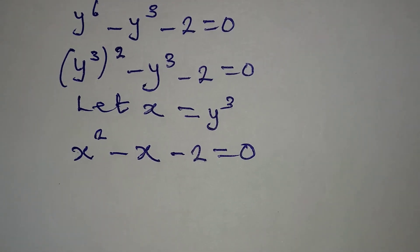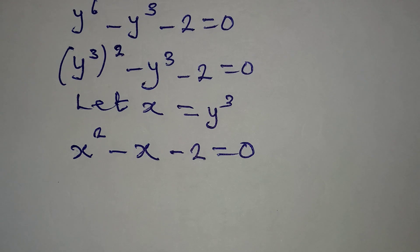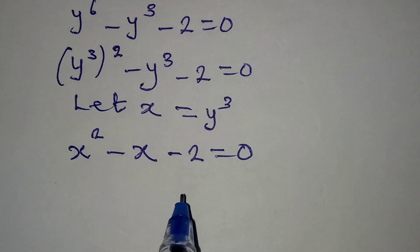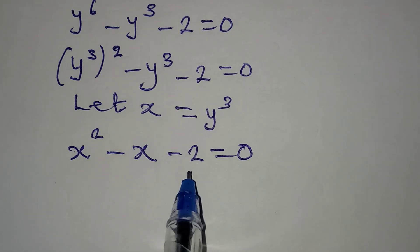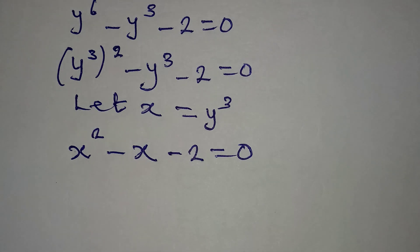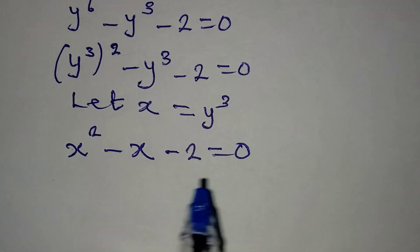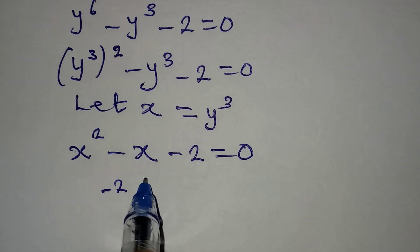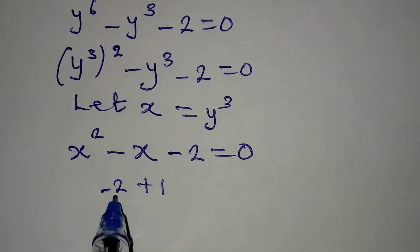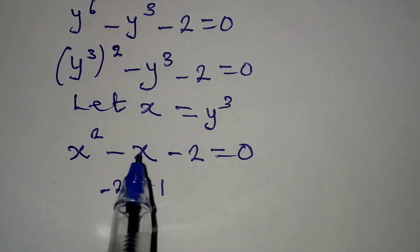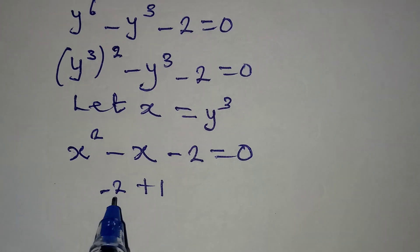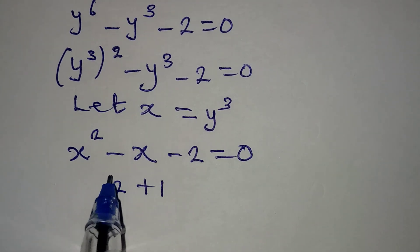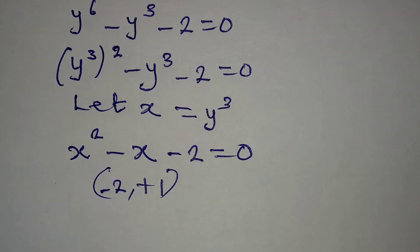We have a quadratic equation that we can solve by factorization. If we are going to solve this using factorization, the question is: what two numbers do we multiply to get minus 2, and add together to get minus 1? Because minus 1 is the coefficient of x. If I pick minus 2 and plus 1, putting the two together gives minus 1, and minus 2 times 1 gives minus 2. So the two numbers are minus 2 and plus 1.